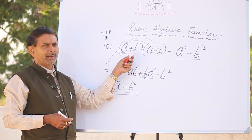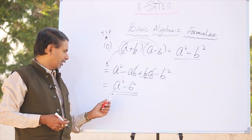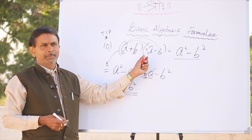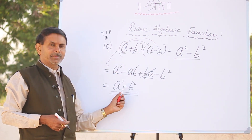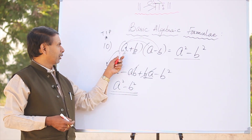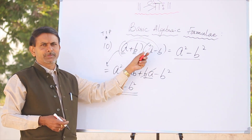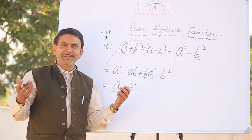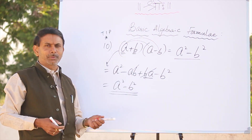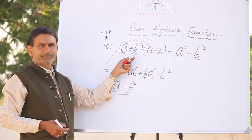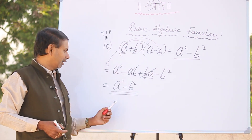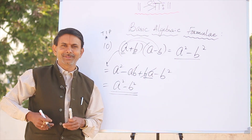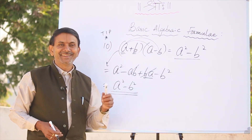Ram plus Sham, Ram minus Sham — what is the answer? Ram square minus Sham square. Ram plus Bhim, Ram minus Bhim — answer is Ram square minus Bhim square. Bangalore plus Mysore, Bangalore minus Mysore — Bangalore square minus Mysore square. Idli plus Chutney, Idli minus Chutney — Idli square minus Chutney square.